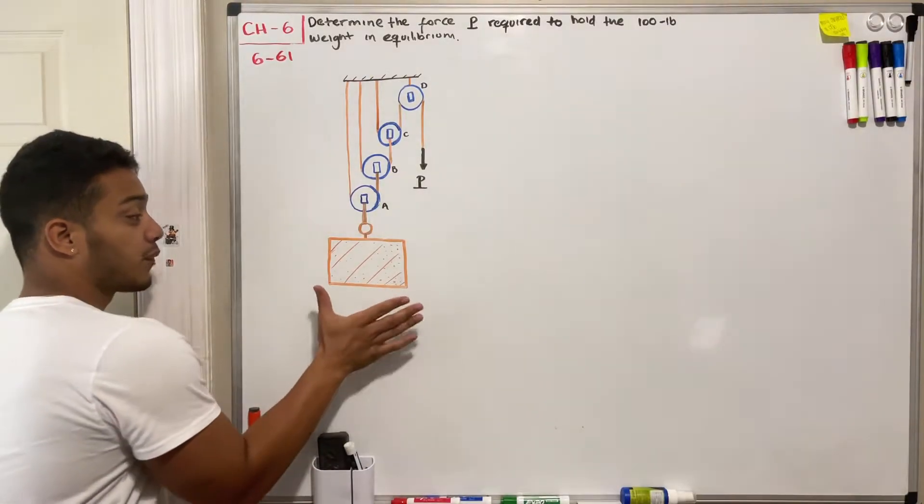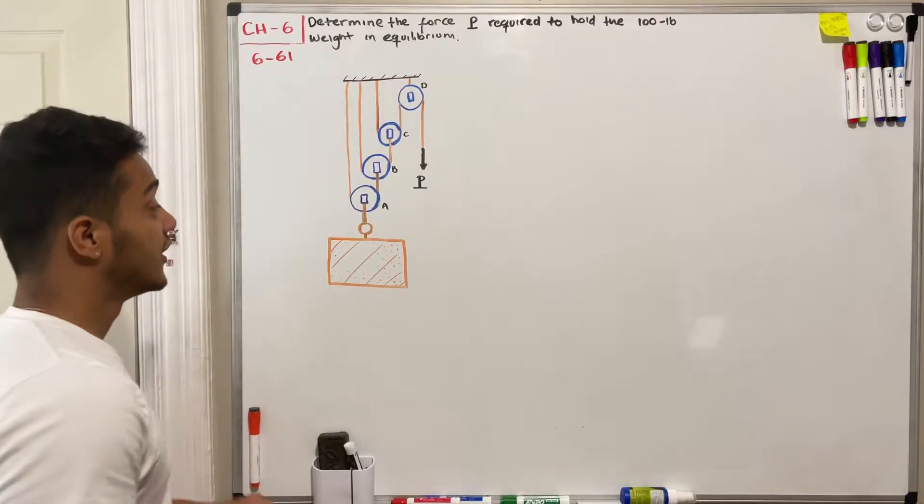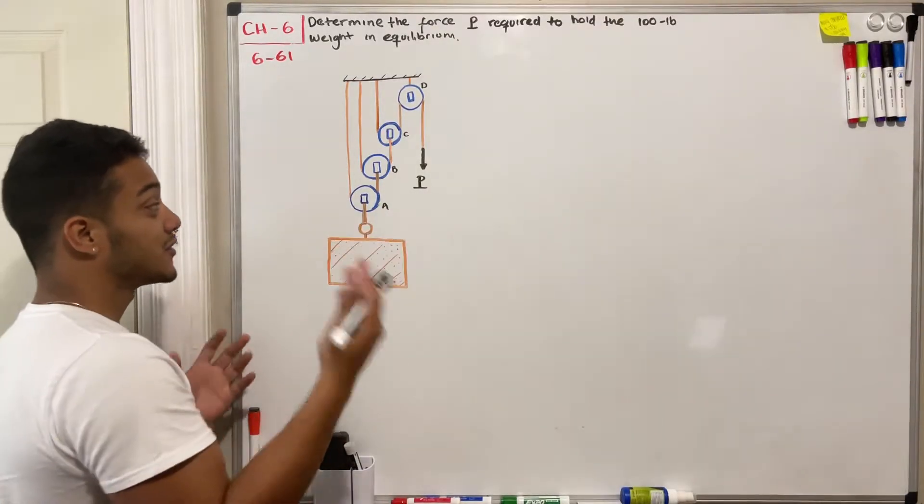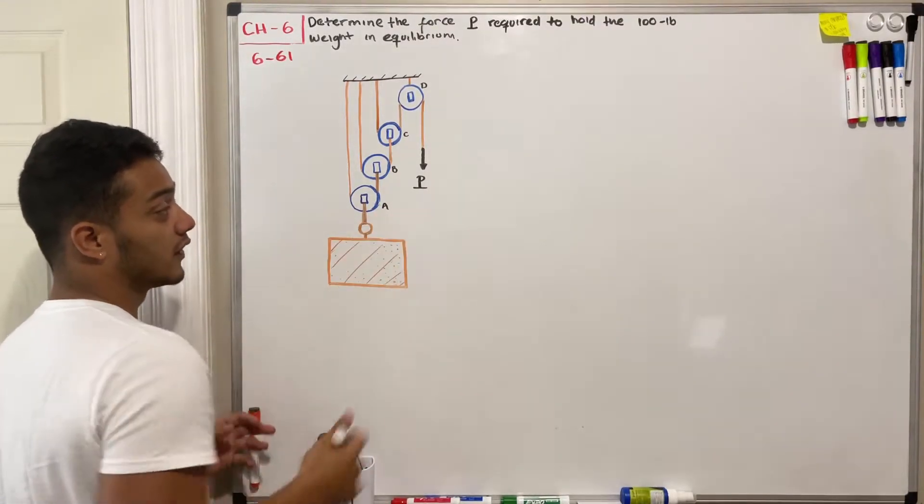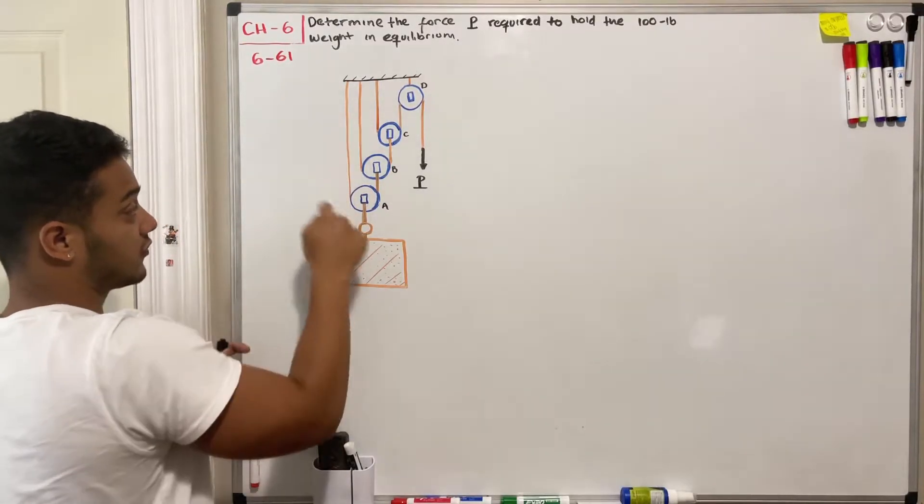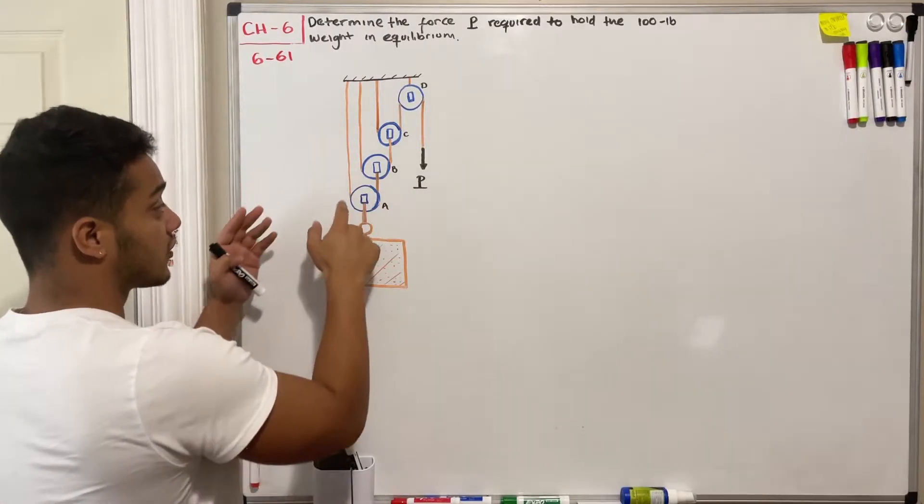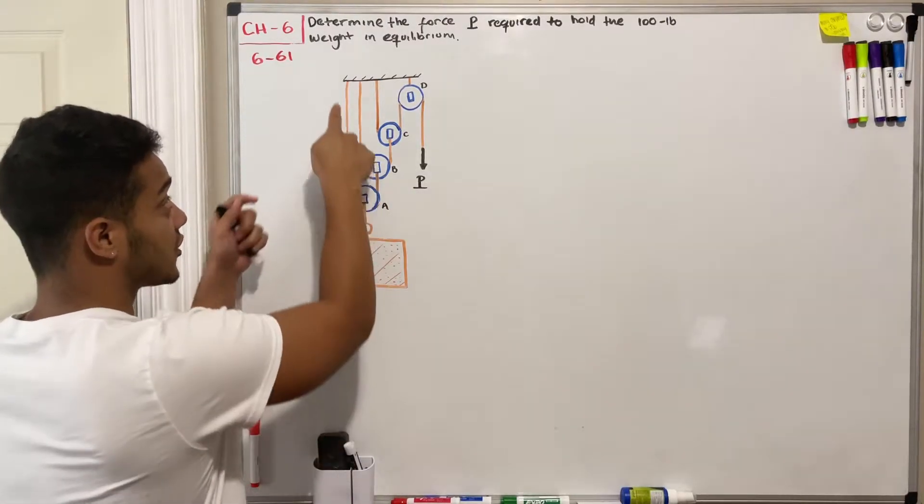This problem comes right after the chapter of frames and machinery. In here we got this machine or system that is called a pulley. What we need to know about pulleys is that they are usually just this round system that around its surface area has some rope.